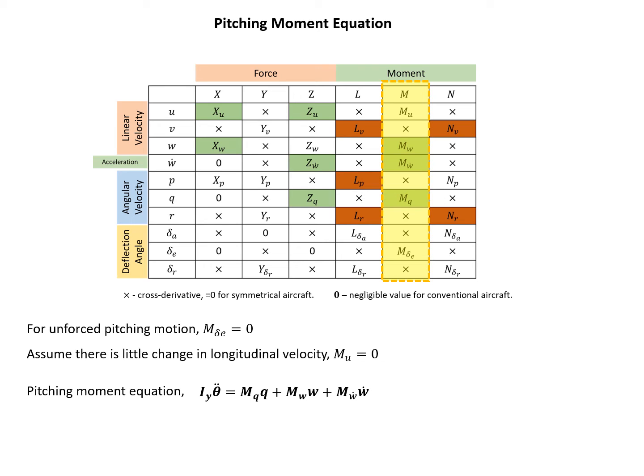Which means mu, partial M partial U is 0, so we're not taking that into account. So then we have only 3 items left, and using those 3 items, 3 aerodynamic derivatives, we can write down the pitching moment equation, and basically it follows the Newton's second law.